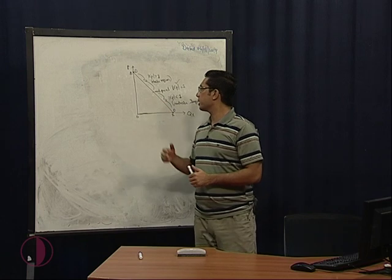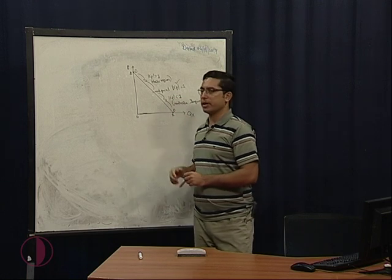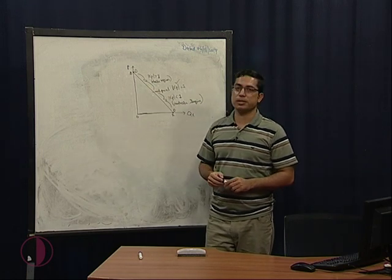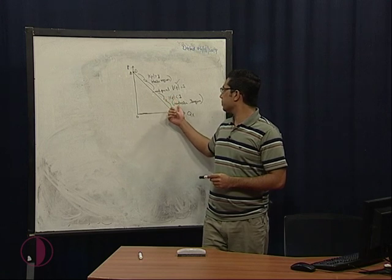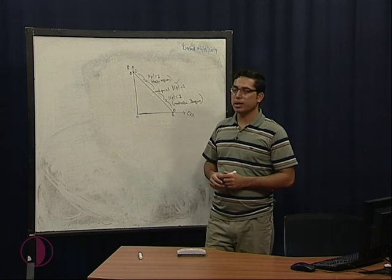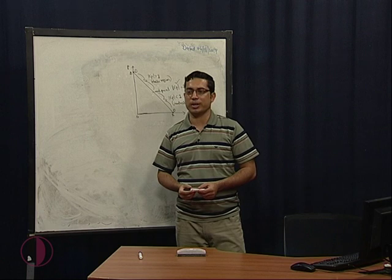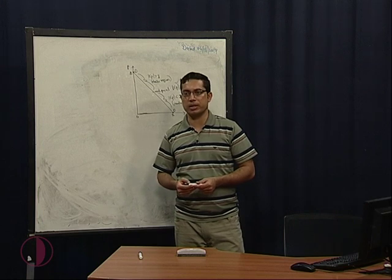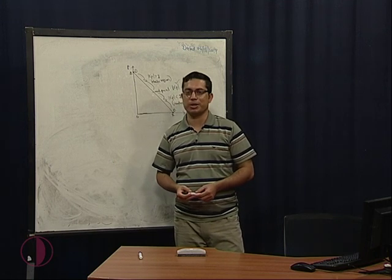At the midpoint on the linear demand function, we have price elasticity of demand equal to 1. Above the midpoint, the price elasticity of demand will be greater than 1, and below the midpoint area, the absolute value will be less than 1. This means that along the linear demand curve, price elasticity changes at different points. In the next lecture, we will be talking about the arc price elasticity of demand, the income elasticity of demand, and the cross elasticity of demand. Thank you so much.